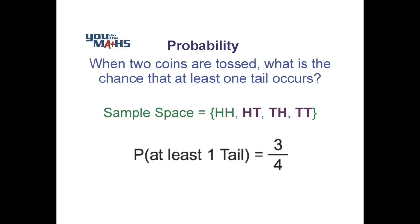Now let's have a look at the probability of getting at least one tail on the coins. We can see from our sample space that we've got three possibilities highlighted. We could have one tail — and there are two outcomes there — or we could have two tails. So the probability of getting at least one tail is three out of four.